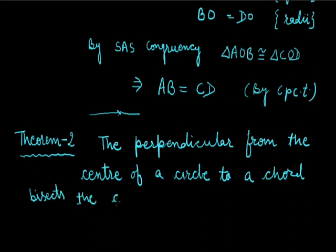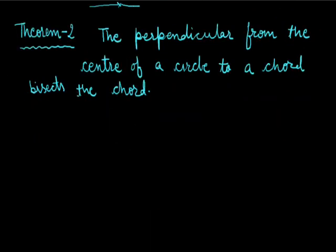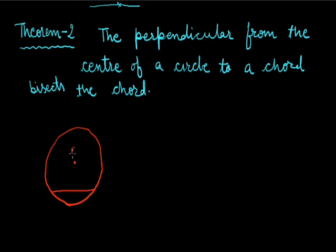That means, given a circle with a chord, if we draw a perpendicular from the center onto this chord, it cuts the chord at a point M. This is a circle with center O, and chord AB is given, and we drop a perpendicular from the center to the chord, which cuts the line at point M.